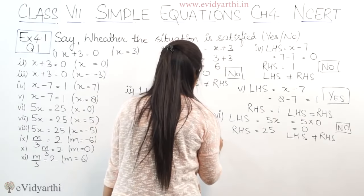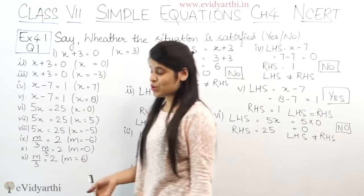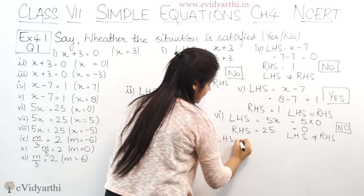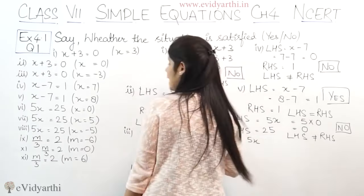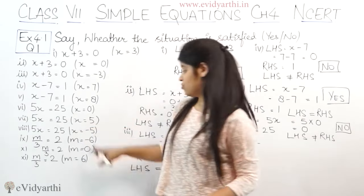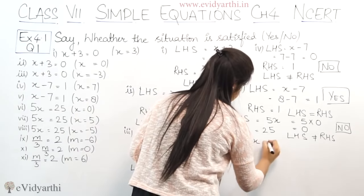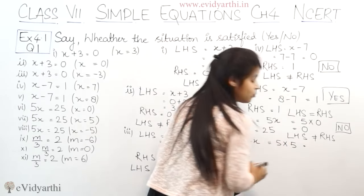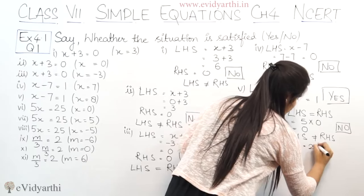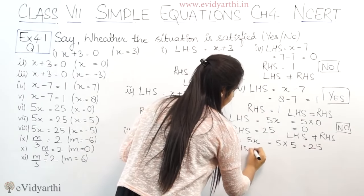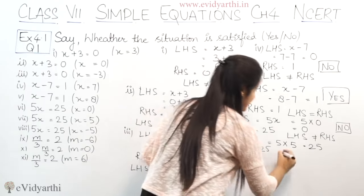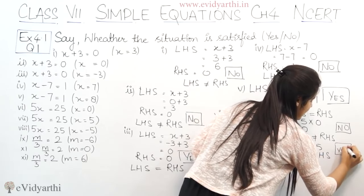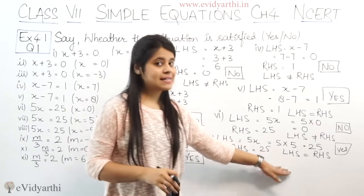In the 7th part we have the same equation: 5x equals to 25. Left hand side is 5x. Now x value given is 5. So 5 multiplied by 5 is 25. RHS is also 25. LHS equals RHS, so the equation is satisfied and the answer is yes.